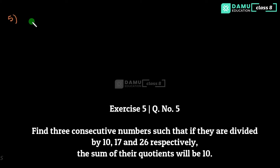Hello viewers, thanks for watching. Please subscribe and click the bell icon. Our fifth question is: find three consecutive numbers such that if they are divided by 10, 17, and 26 respectively, the sum of their quotients will be 10.